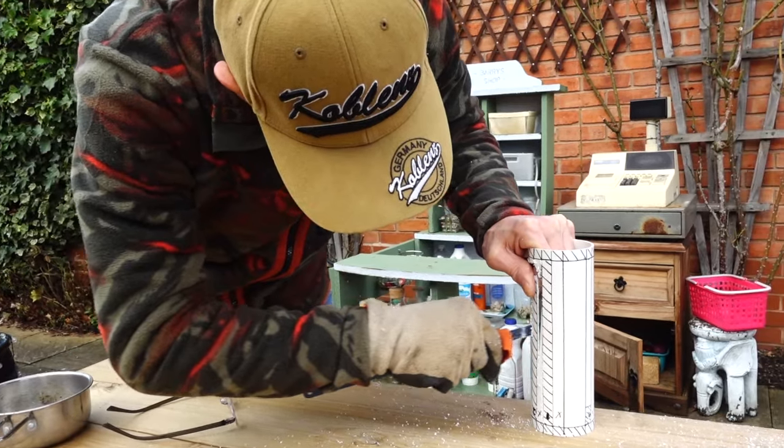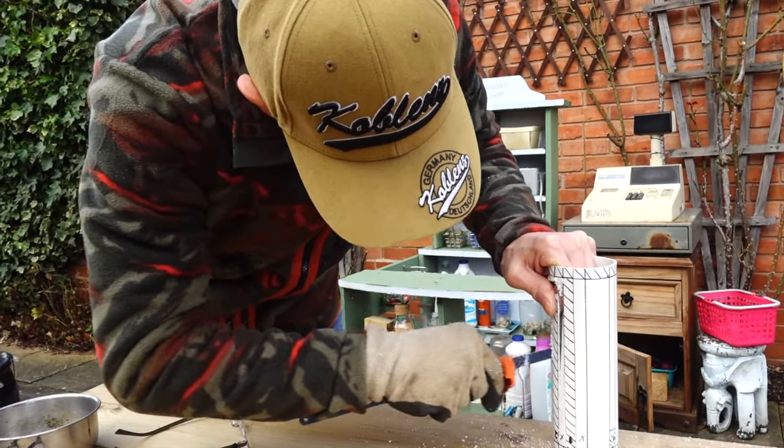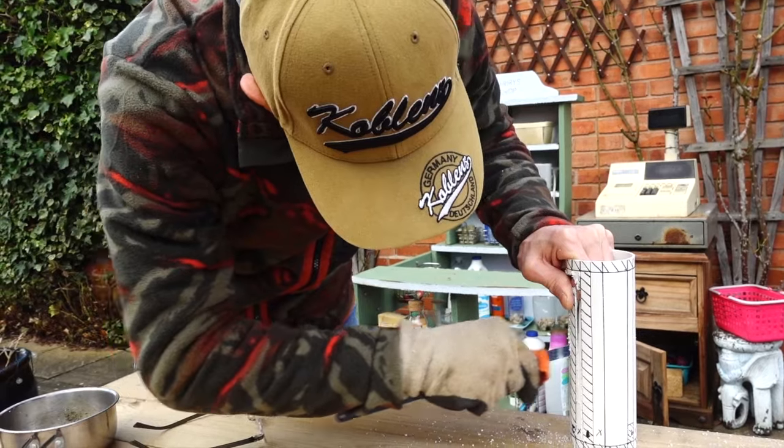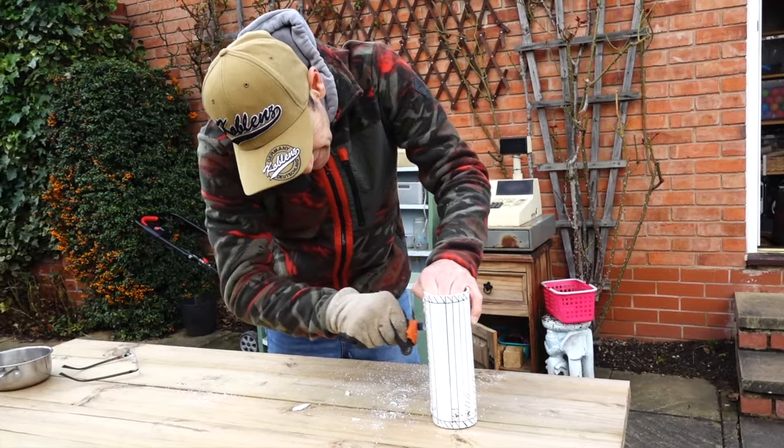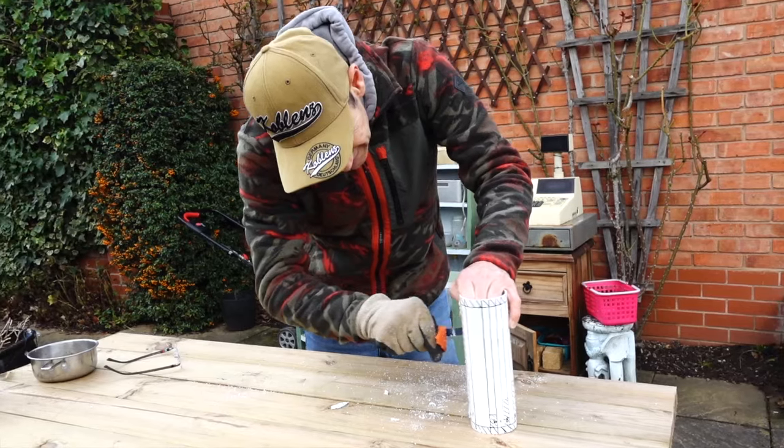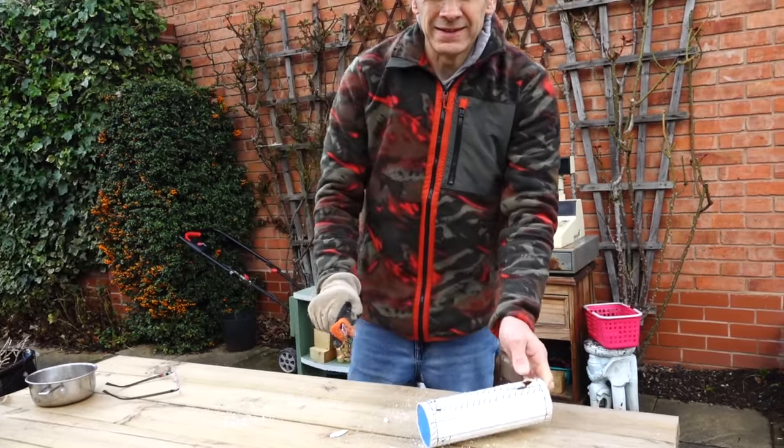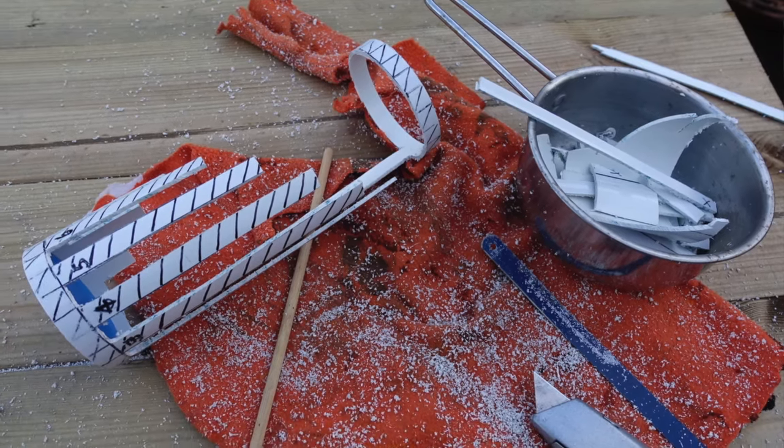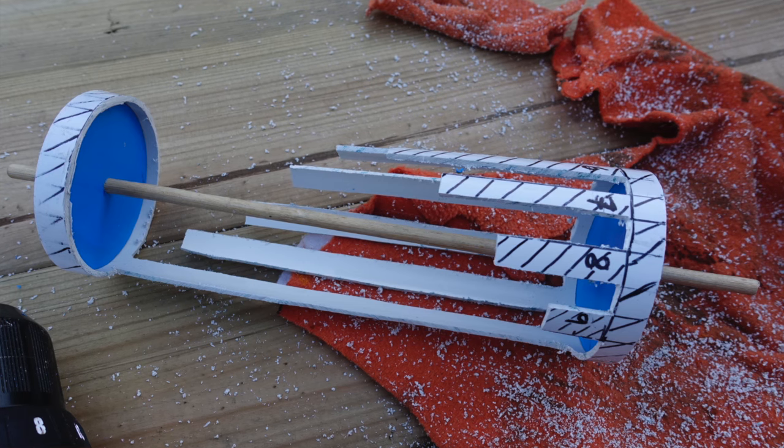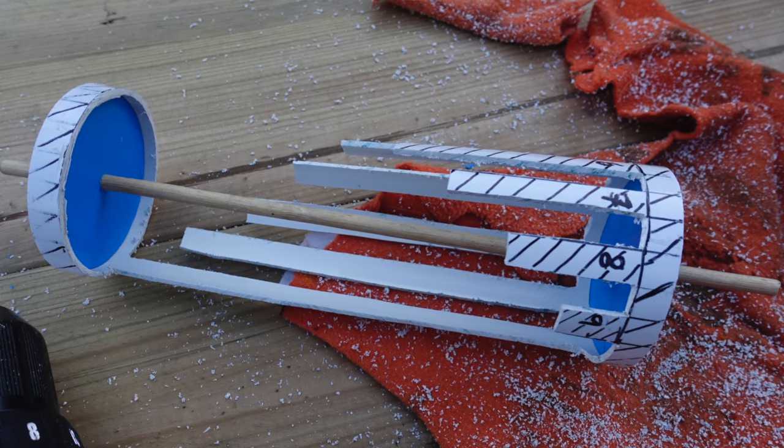To do this I took a section of drain pipe, marked the gear teeth onto it and then went out into the garden to cut it out by hand with a hacksaw blade. It was not an easy task and in the end it also produced a worrying amount of plastic waste but I did end up with a reasonably good and usable Leibniz gear.